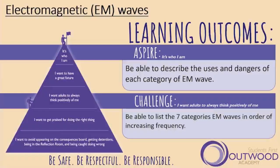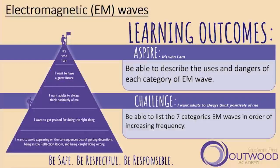So I'm going to take you through this lesson. It's on electromagnetic waves. Now, electromagnetic is quite a long word, so we often shorten it to the abbreviation EM, as you can see in the title here. So I'm going to refer to them as EM waves. The challenge objective in this lesson is that you are able to list the seven categories of EM waves in order of increasing frequency.